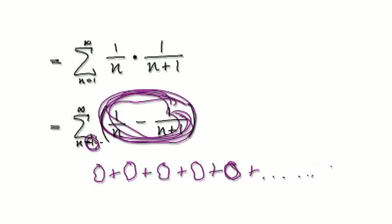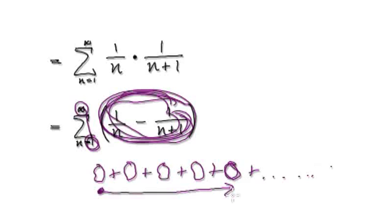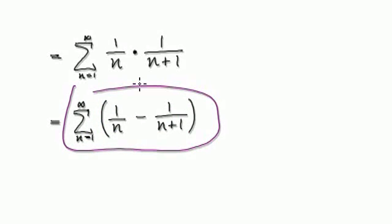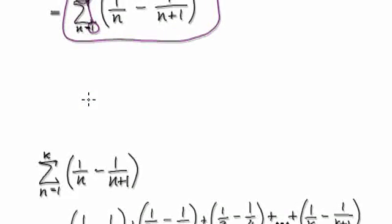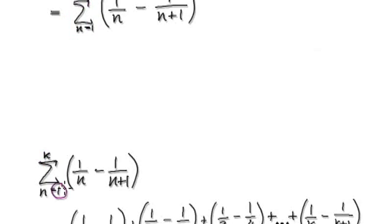We are trying to sum up from the very first one all the way to infinity. But rather than summing up all the way to infinity, the technique we're going to use is to sum it up from the first term all the way to an arbitrary term — let's say k — and then later on we're going to take the limit as k tends to infinity.